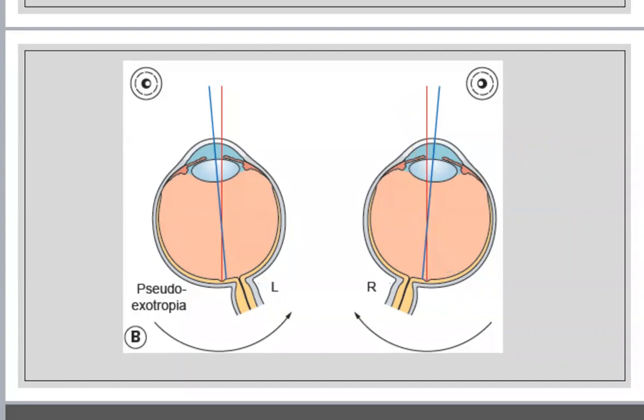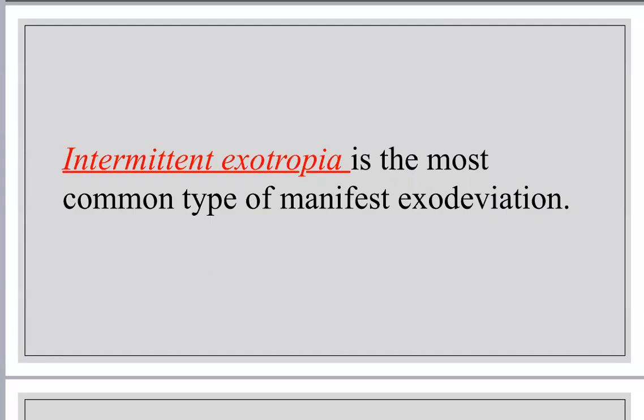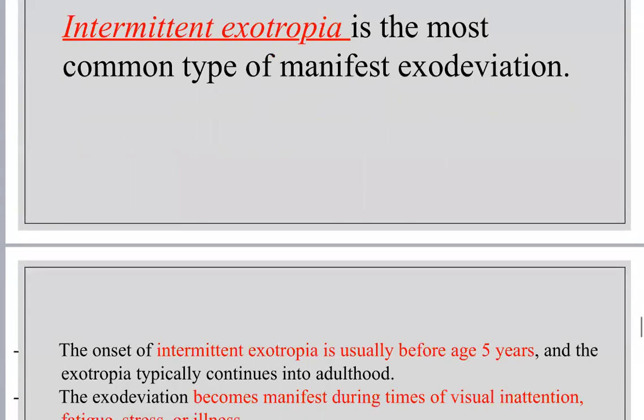Both optical axes are actually aligned — the problem is temporal dragging of the macula. Intermittent exotropia is the most important type because it is the most common form of manifest exodeviation. The onset is usually before age five years. It becomes manifest during visual inattention and fatigue, and also with exposure to bright light — which is extremely important for MCQs.